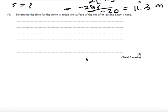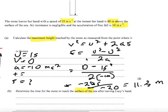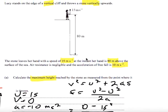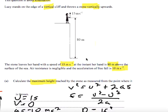Part B says to determine the time for the stone to reach the surface of the sea after leaving Lucy's hand. Well this is still an equations of motion question. We're still traveling in a straight line with a constant acceleration. We just want to know how long it takes for the stone to hit the sea. That's a displacement from here to here. A displacement of 80 meters.